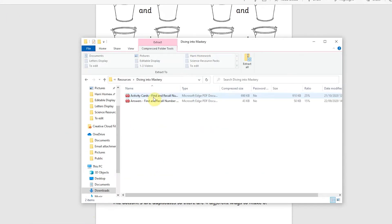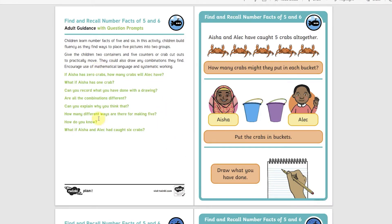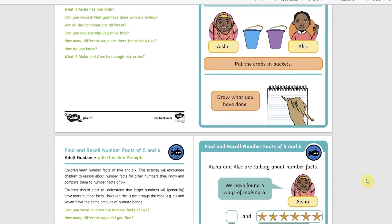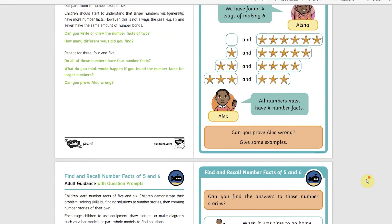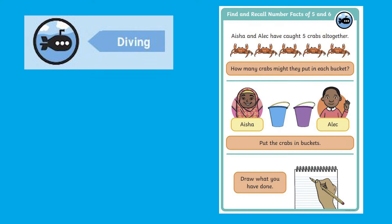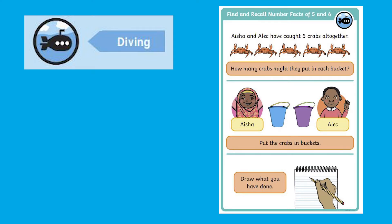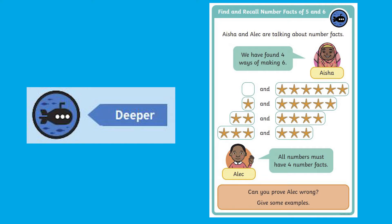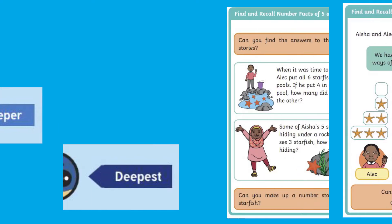Lots of our Planet Maths lesson packs have diving into mastery sections. These are carefully designed activities to take the child through a learning journey, initially ensuring that they are fluent with the key concept being taught, then applying this to a range of reasoning and problem solving activities. These are differentiated by diving, deeper and deepest. The activity cards might not necessarily be used in a linear way — some children may begin at the deeper section, and others may dive straight into the deepest section if they have already mastered the skill.